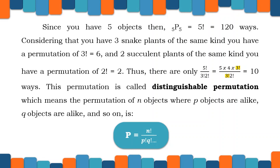This permutation is called distinguishable permutation, which means the permutation of N objects where P objects are alike, Q objects are alike, and so on, is: Permutation equals N factorial all over P factorial times Q factorial, and so on.